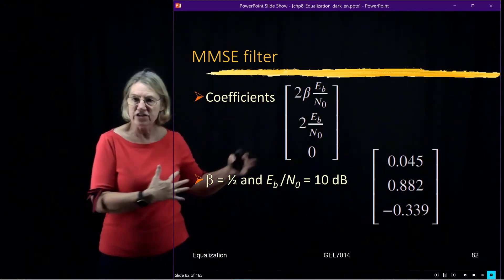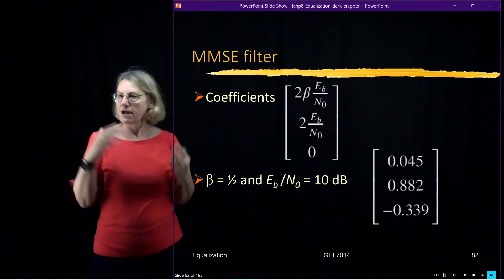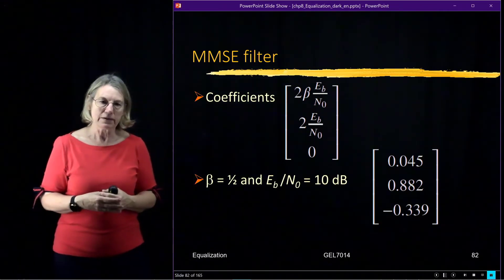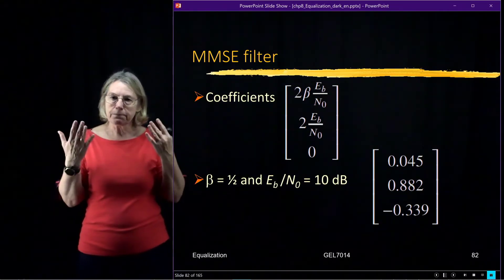As the signal to noise ratio changes, the coefficients will change, which makes sense because the MMSE is sensitive to the noise level and trying to minimize it. So let's look at any particular example.